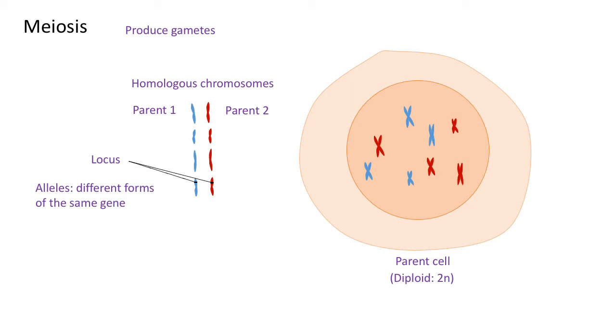In this case, as we've shown, the parent cell is always diploid. So in our example it has eight chromosomes.